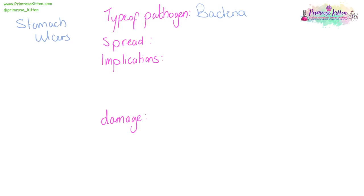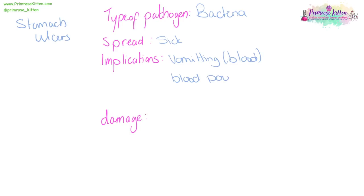The bacteria — H. pylori — is spread the same way stomach bugs are generally spread. Stomach ulcers are large, open sores in your stomach, so you're going to be vomiting — generally vomiting blood. It is going to be very painful, and there's going to be blood in your stool as well.